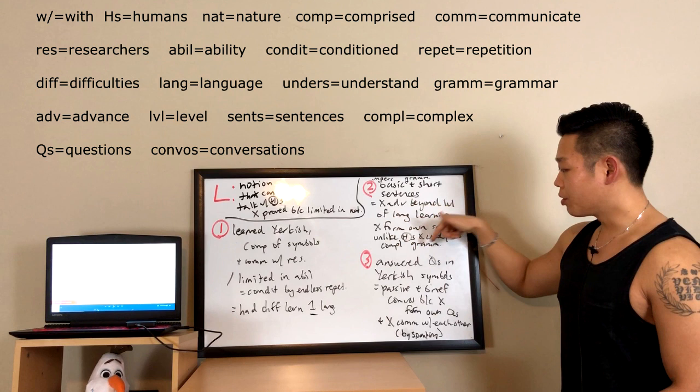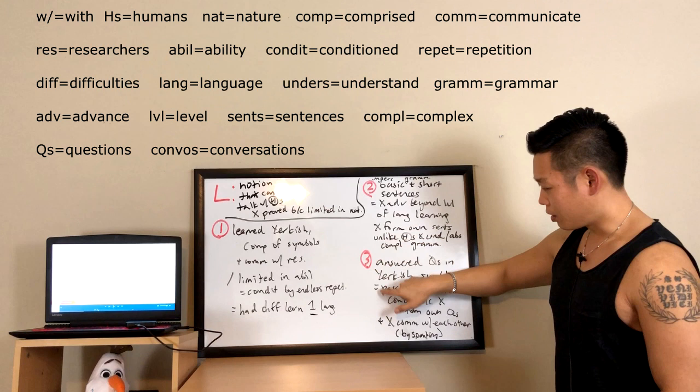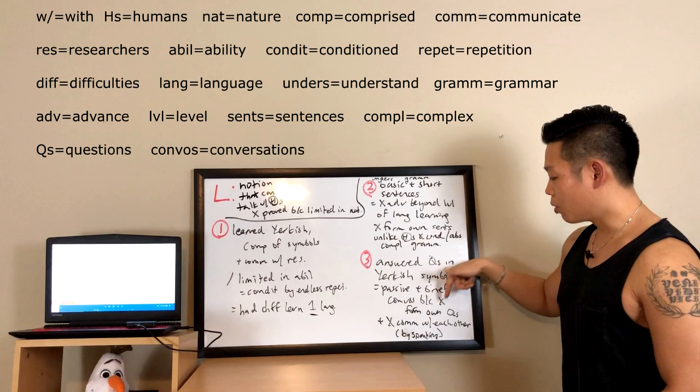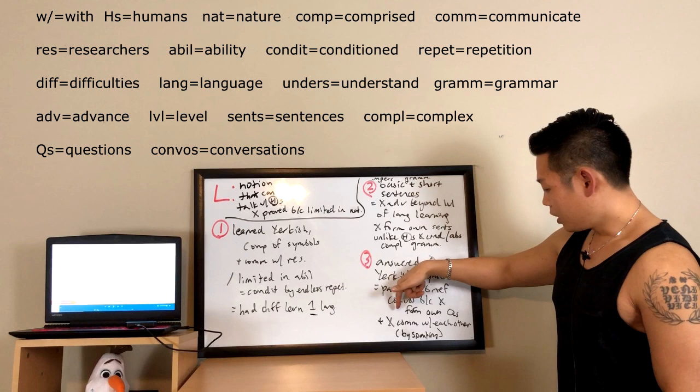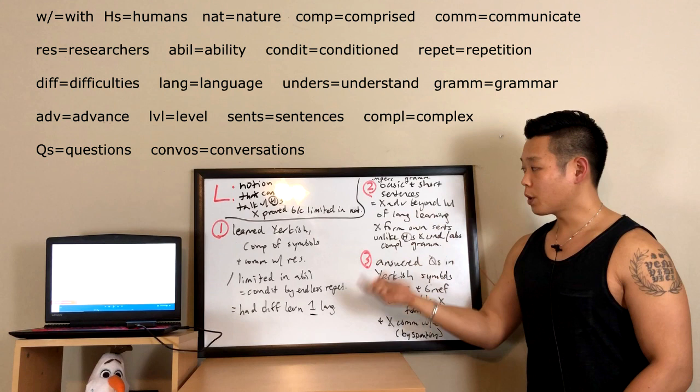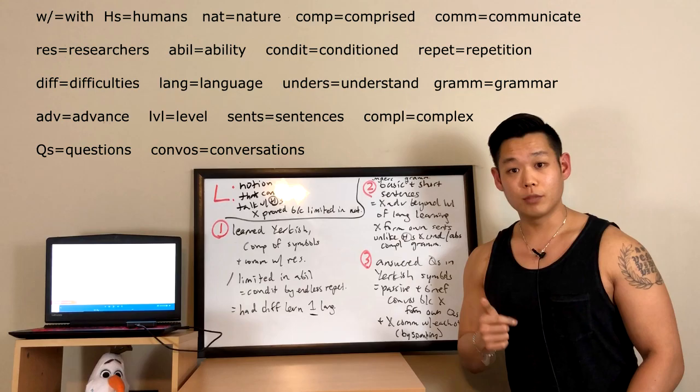For the third argument, the professor said that Lana only answered the researchers' questions in Yerkish and symbols. They were only able to hold passive and brief conversations because Lana could not form her own questions and keep the conversation going. Besides, none of the chimps in the research project seemed to communicate with each other through any comprehensible language.